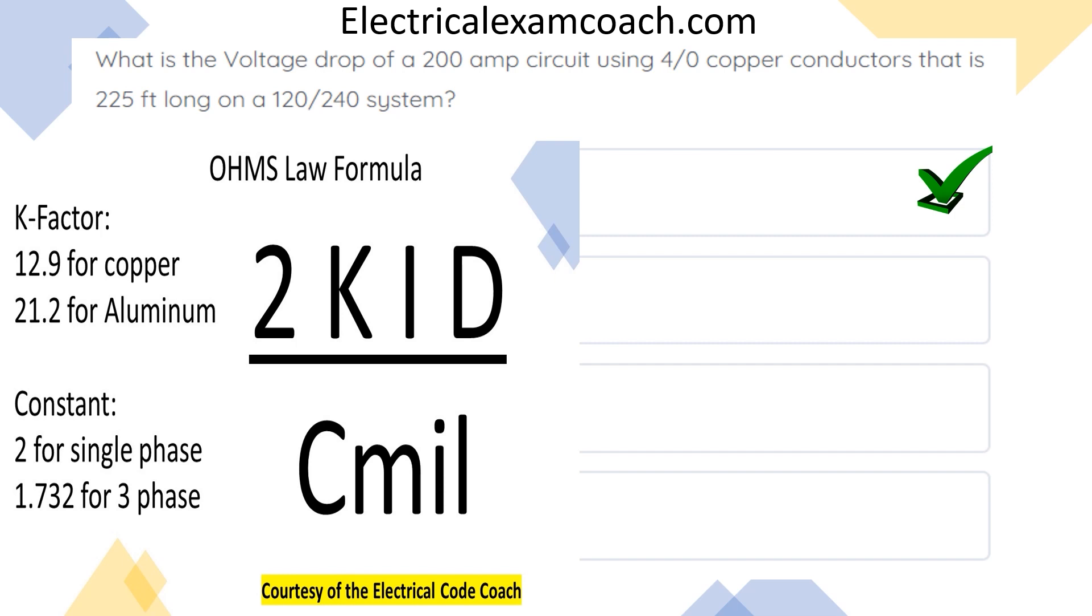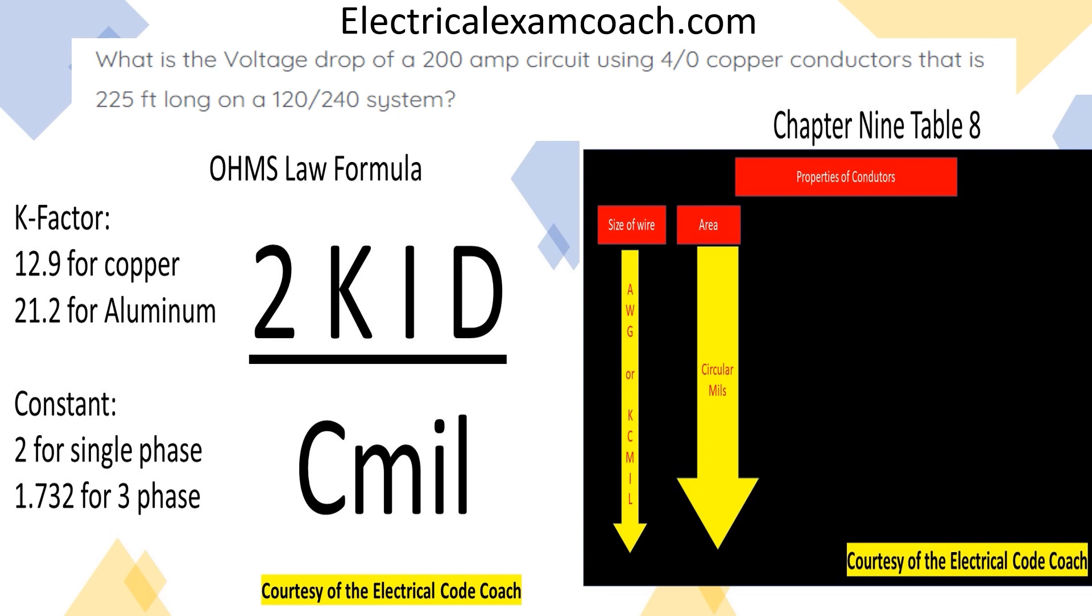For this one, we're going to use our Ohm's Law formula, two kid over C mils. We're going to have two as our constant. Our K factor is going to be 12.9 this time because it's copper. And then we're going to have our current and our distance divided by the C mils. In order to get that information, we're going to head over to chapter nine, table eight. We're going to start on the left-hand side until we find our conductor. Then we're going to crumb over and we're going to get our C mils. After we bear out all our math, and this is what I love about formulas. Just plug in what you know, and then spit out the answer. Two multiplied by 12.9, multiplied by 200, multiplied by 225, divided by the circular mils of a 4-aught copper conductor is going to equal 5.48676, and it continues on. We're going to round up to 5.5 and call it a day. Let's get to it.